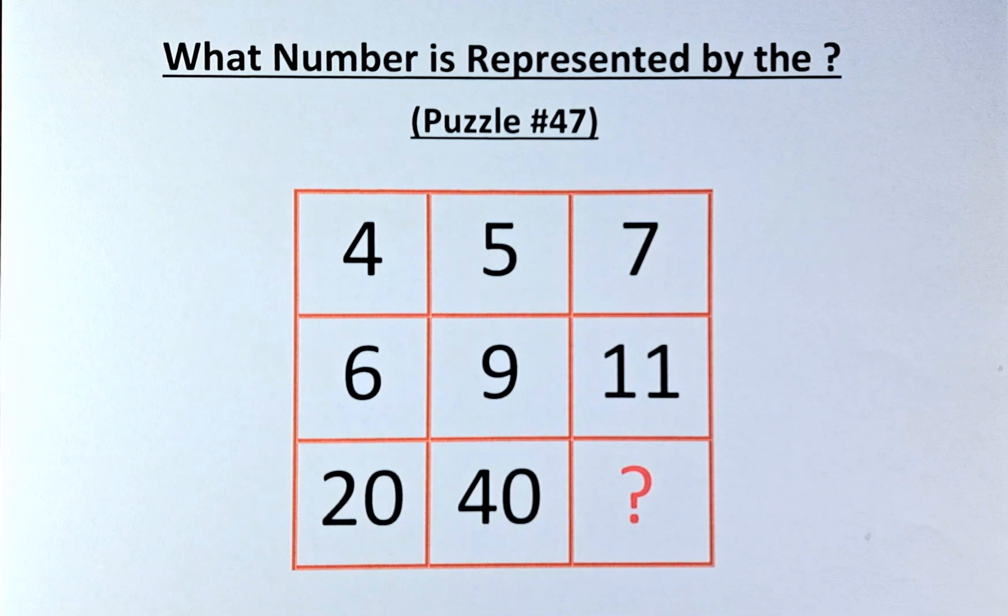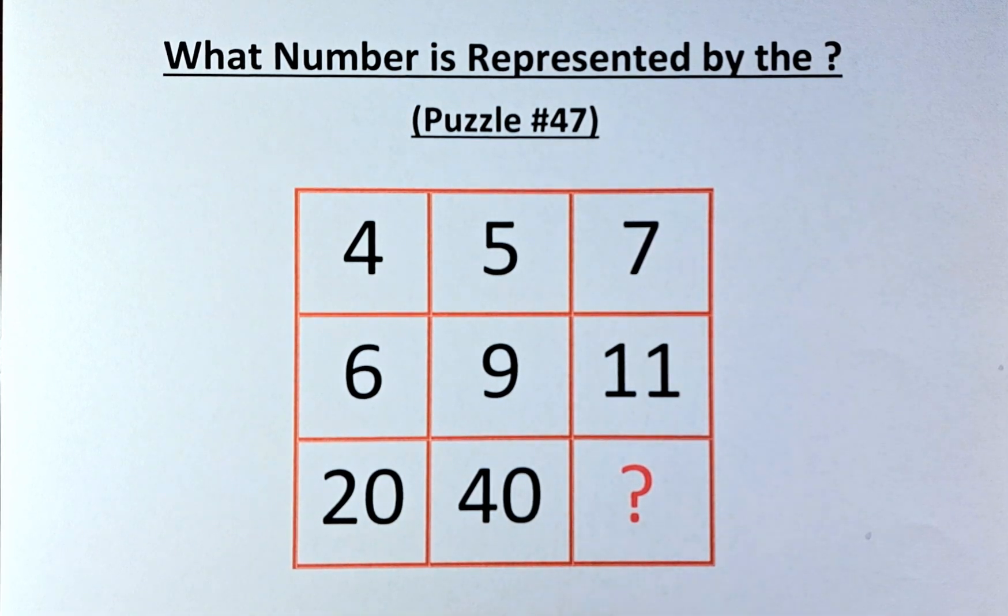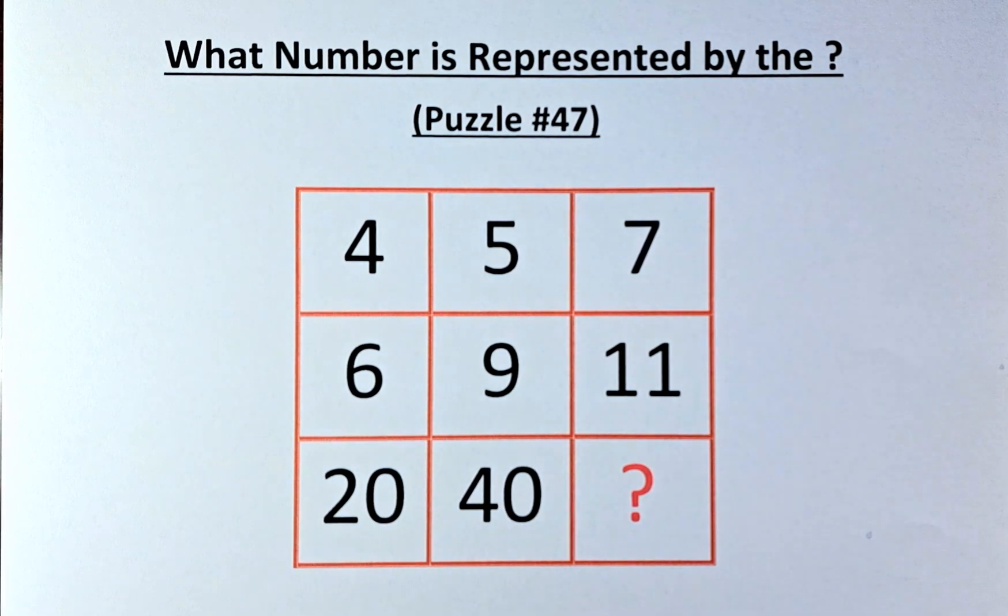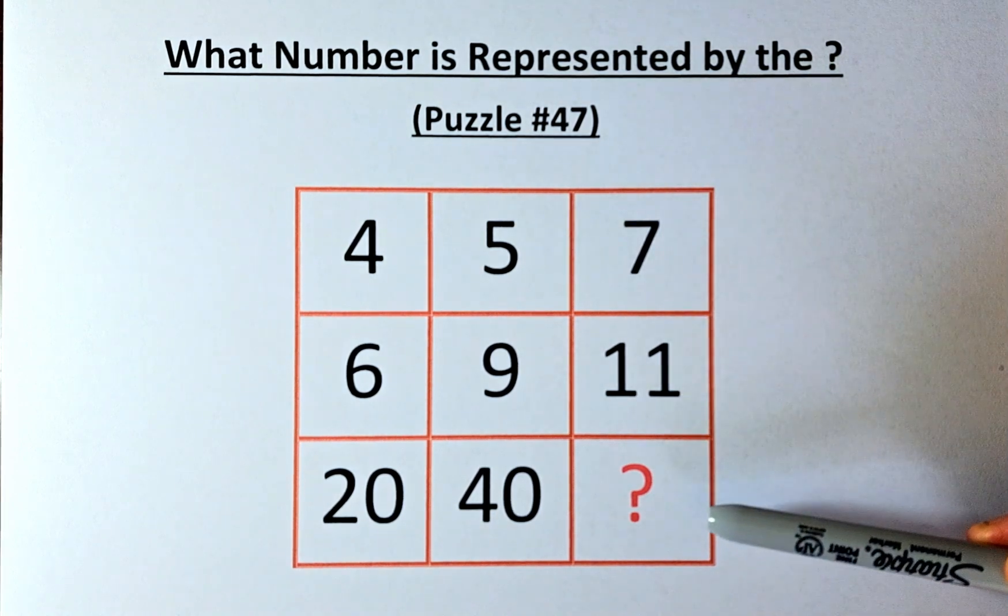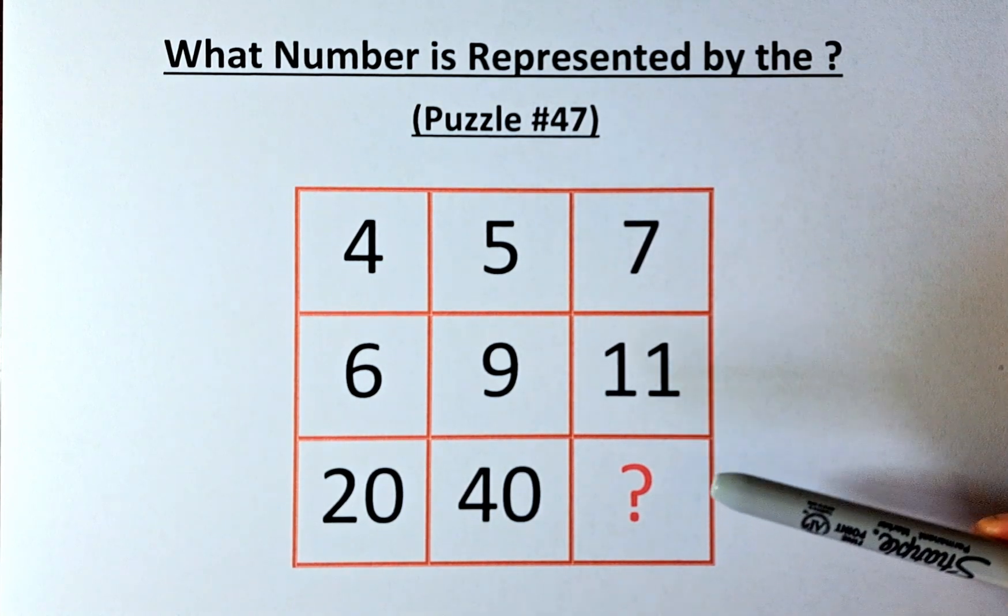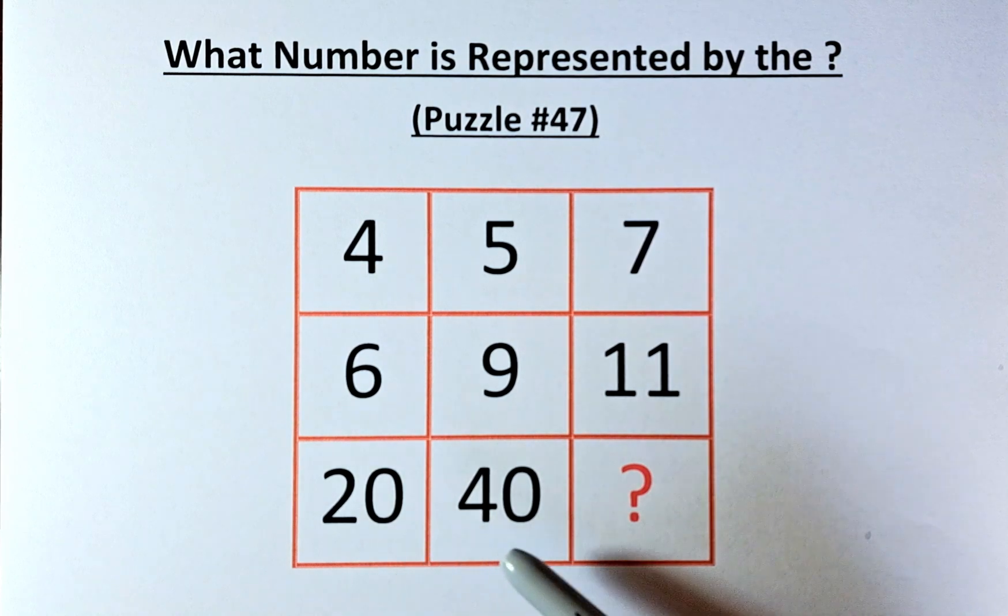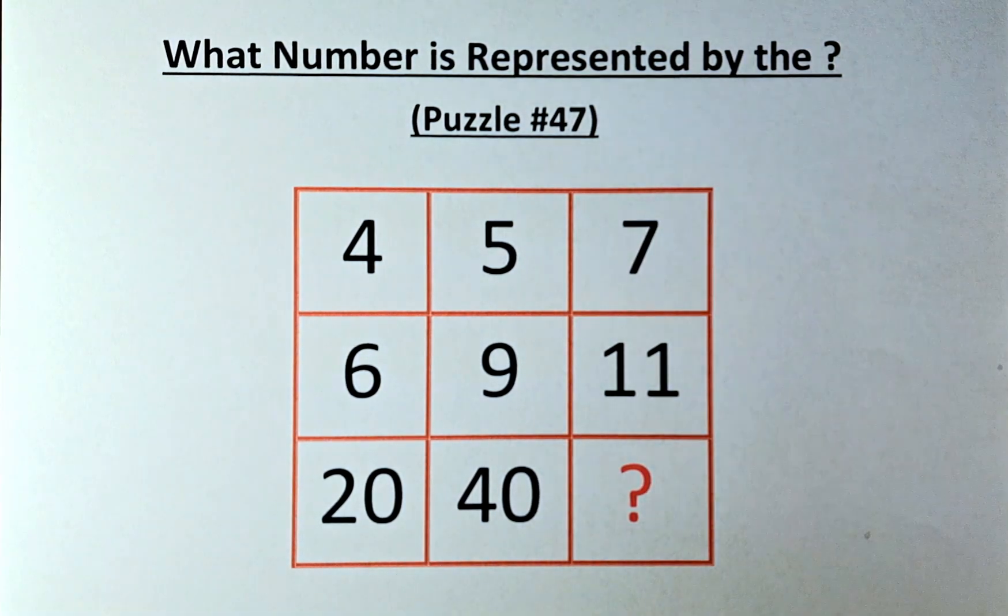If you can solve this problem and this puzzle, well done, because this is quite an interesting puzzle. You can either work in terms of rows or columns, because the biggest numbers are all on the right-hand side of the column, 7, 11, and it's also on the bottom, 20, 40, and a question mark. So either way it works.